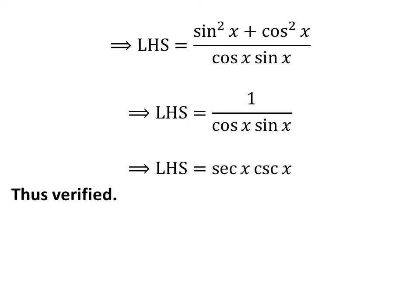We know 1 over cos x equals sec x and 1 over sin x equals csc x. So left hand side equals sec x times csc x.